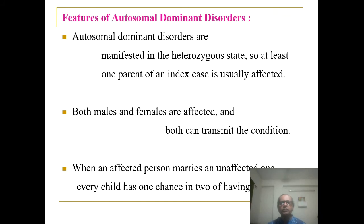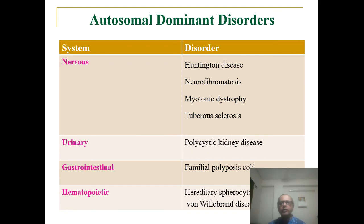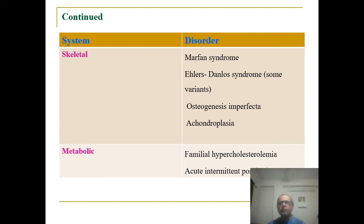Features of autosomal dominant disorders: these disorders are manifested in the heterozygous state, so at least one parent of an index case is usually affected. Both males and females are affected and both can transmit the disease. When an affected person marries an unaffected one, every child has a one in two chance of having the disease. Examples include — nervous system: Huntington disease, neurofibromatosis, myotonic dystrophy, tuberous sclerosis; urinary system: polycystic kidney disease; gastrointestinal tract: familial polyposis coli; hematopoietic: hereditary spherocytosis; skeletal system: Marfan syndrome, osteogenesis imperfecta, achondroplasia; metabolic: familial hypercholesterolemia, acute intermittent porphyria.